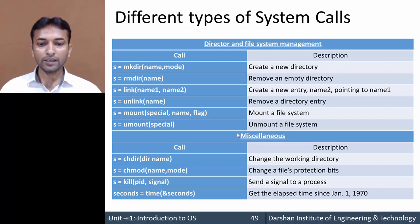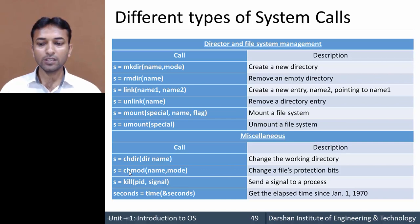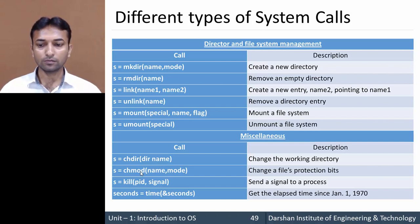The second category is miscellaneous. The first one is chdir (change directory), used to change the working directory. Then chmod (change mode), used to change a file's protection bits. Then kill, used to kill any process.